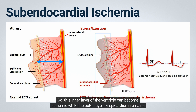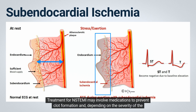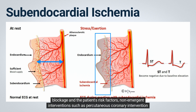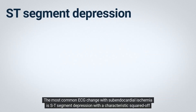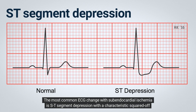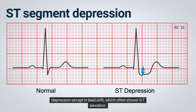This inner layer of the ventricle can become ischemic while the outer layer, or epicardium, remains normally perfused. Treatment for non-STEMI may involve medications to prevent clot formation and, depending on the severity of the blockage and the patient's risk factors, non-emergent interventions such as percutaneous coronary intervention or coronary artery bypass grafting. The most common ECG change with subendocardial ischemia is ST-segment depression with a characteristic squared-off shape. Acute transmural ischemia produces ST-segment elevation, while subendocardial ischemia produces ST-segment depression — except in lead aVR, which often shows ST elevation.